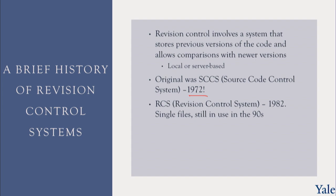RCS operates on one file at a time and was still in use in the 90s. You would have a file main.c that you're working on, and in the same directory you'd find a file main.c,v which would store all the previous versions of the file to allow you to go back and forth. So it was a different control system for each file — a file-based system.